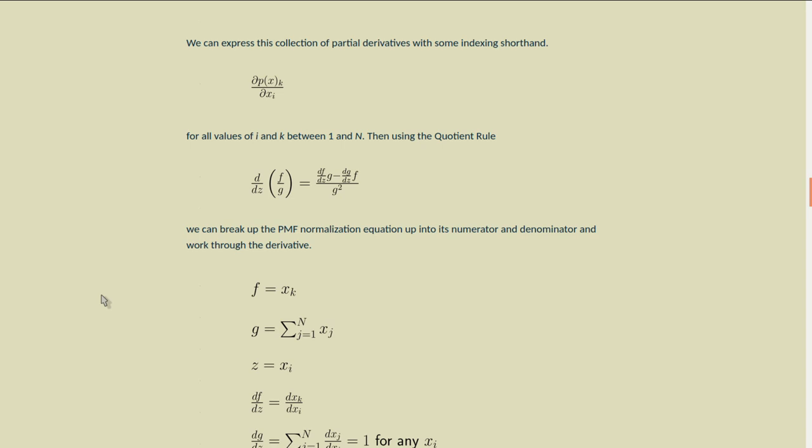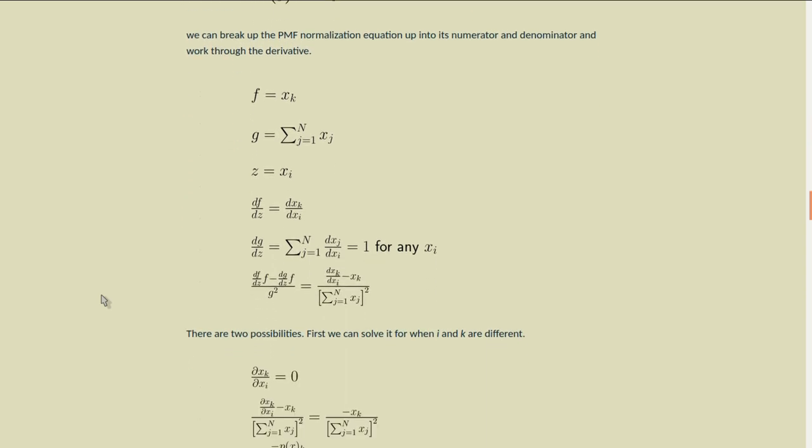We can break up the PMF normalization equation into its numerator and denominator and work through the derivative. So in this case, our f is x sub k. Our g function is the sum of x sub j for all j's between 1 and n. And our z will be x sub i. Now the derivative of f with respect to z will be the derivative of x sub k with respect to x sub i. The derivative of g with respect to z will be the sum of the derivative of x sub j with respect to x sub i, which will equal 1 for any x sub i. And then putting it all together, we get this equation for the quotient rule, which results in the derivative of x sub k with respect to x sub i, minus x sub k divided by the square of the sum of x.